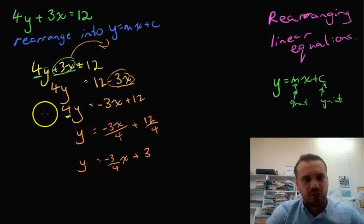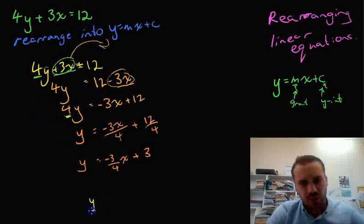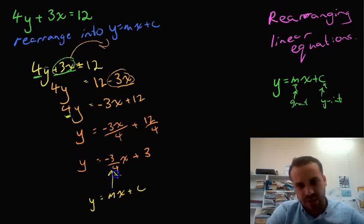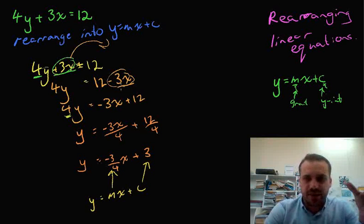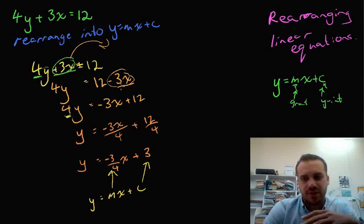So, now we have it in the form y equals mx plus c, where this is our m value, and this is our c value. Okay, this is some pretty basic algebra, really. The whole point, the thing that we're trying to do here is get y by itself, and everything else gets shoved to the other side.